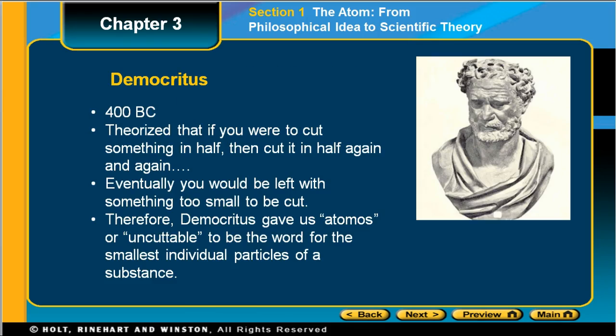One of the first philosophers to talk about atoms and be recorded as having discussions about atoms was Democritus. He lived in Greece in 400 BC and theorized that if you were to cut something in half, and then cut it in half again and again, eventually you would be left with something so small that you couldn't cut it anymore.